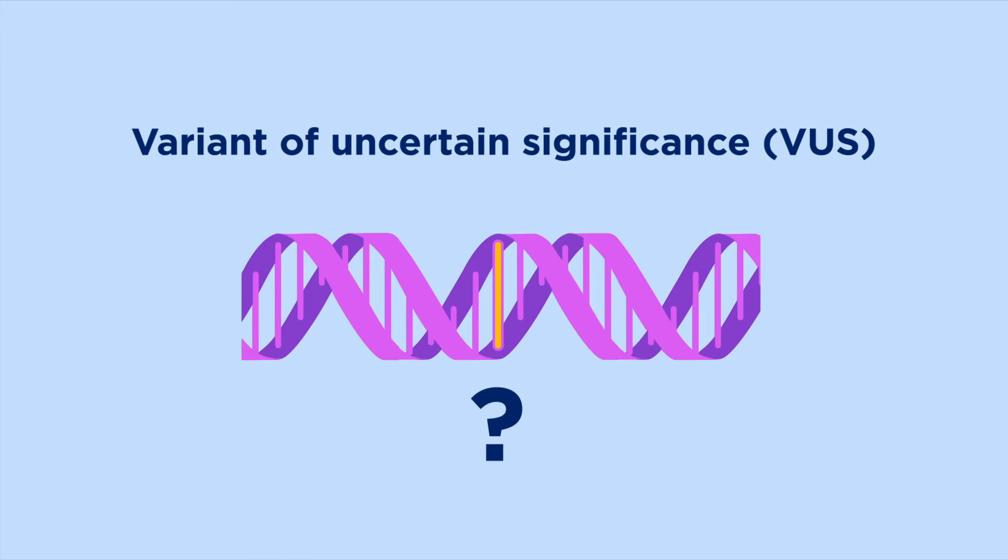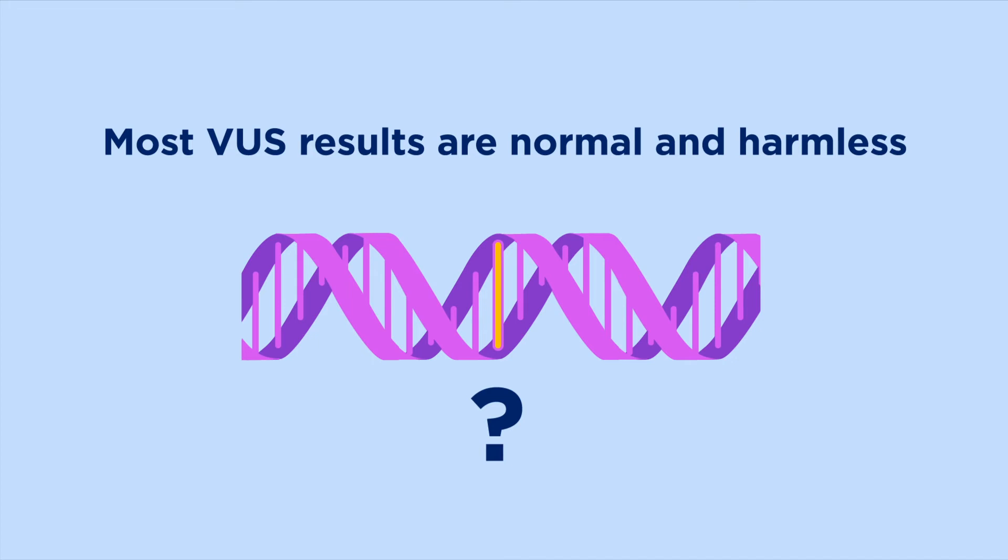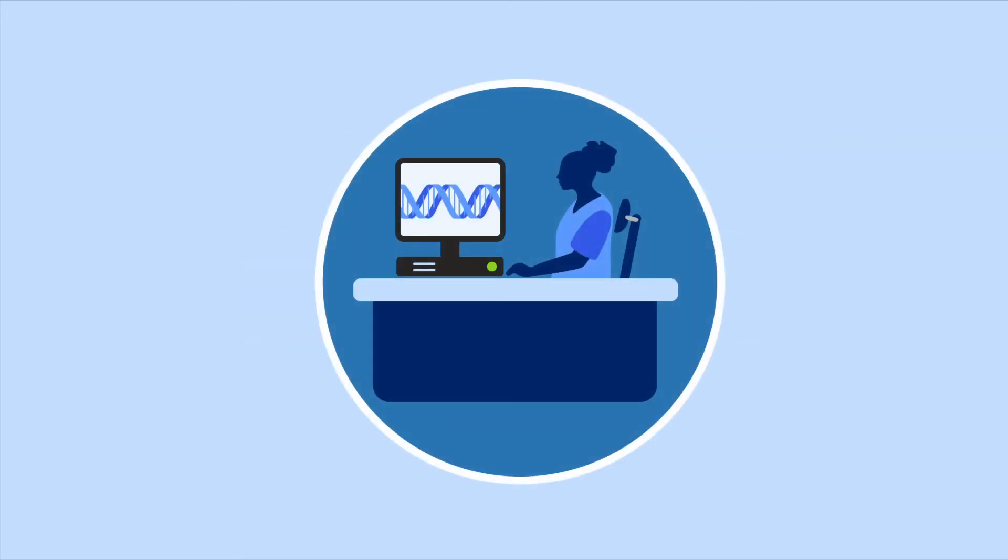As we learn more about how genes work, we can also learn if a certain VUS is normal and harmless, or if it's a mutation that increases your risk of cancer or other health problems. Most VUSs are found to be normal and harmless over time. For that reason, we don't use this result to make medical decisions or recommend your blood relatives have genetic testing to look for them. A VUS isn't a positive result and shouldn't be used like a positive result. We'll encourage you to check with us over time to see if we have more information about it.